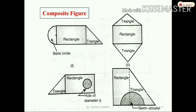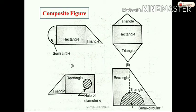The most important point is the composite figure. First, in the table, you identify the basic figures. One composite figure example has a half circle, vertical rectangle, and triangle on the right side. The second diagram has a top rectangle, middle rectangle, and bottom triangle. The third diagram has a triangle, rectangle, and rectangle with a circular hole of a given diameter.